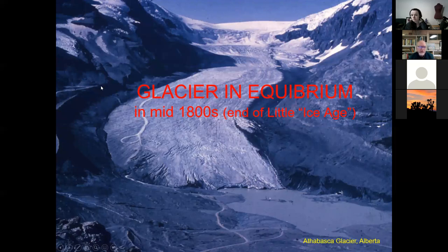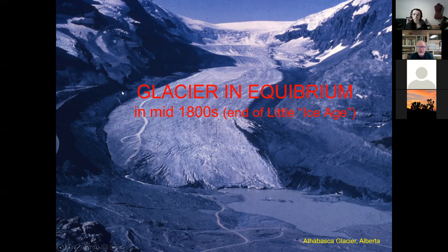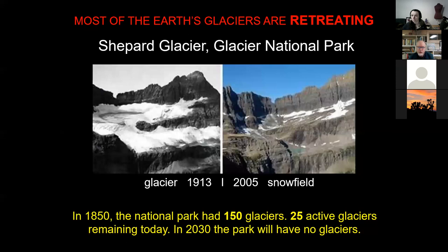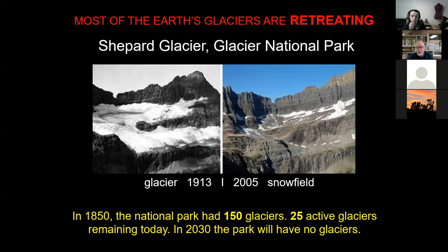Here in the Columbia Icefields, we see a prominent lateral moraine that has been abandoned — the edge of the ice is far below where it once was, probably during the Little Ice Age around 1850 when the glacier was in equilibrium. Glacier National Park is a place people often worry about, and one example is the Shepard Glacier: comparing what it looked like 100 years ago to recently shows it is really no longer a glacier — just snow fields.